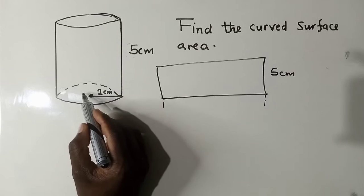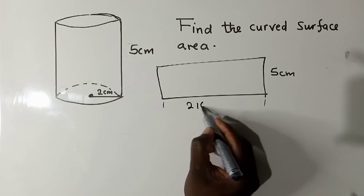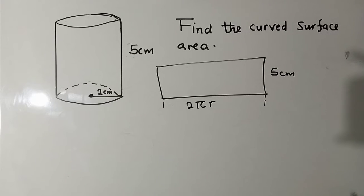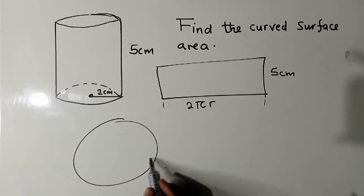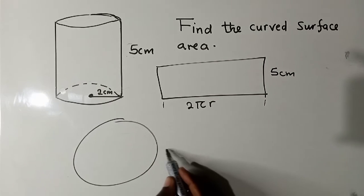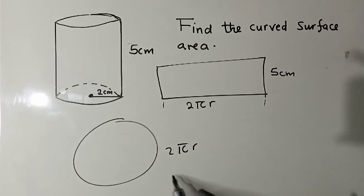Of finding the circumference of the base, which is just 2πr. It's like this, this is a circle. When you want to find the length around this circle, we say 2πr.